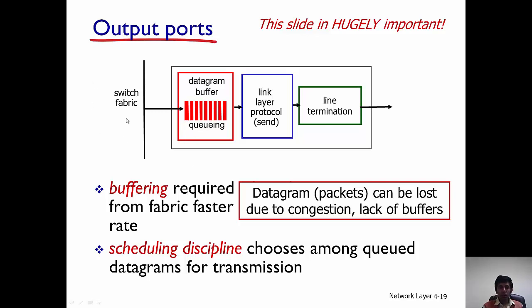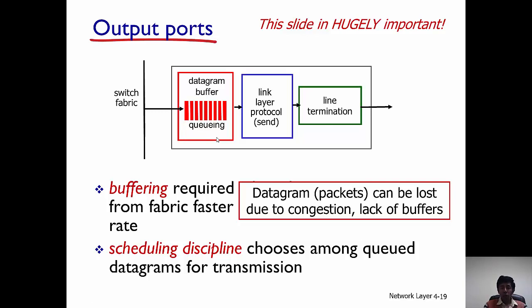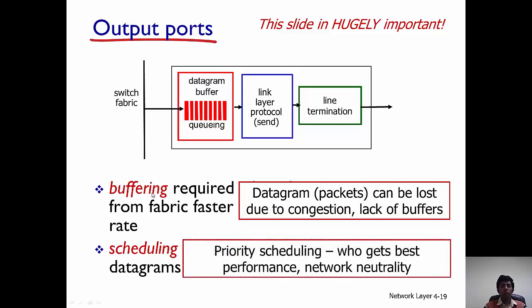The speed of the switching fabric determines whether queues will build up at the output. If the switching fabric is faster than the speed at which packets are sent onto the line, queues are going to build up and packets can be lost. This datagram buffer also handles scheduling, which is the process of determining how different packets are treated. For example, you could have scheduling algorithms that assign different priority levels to packets, determining how they are queued and served — one such example being priority scheduling.